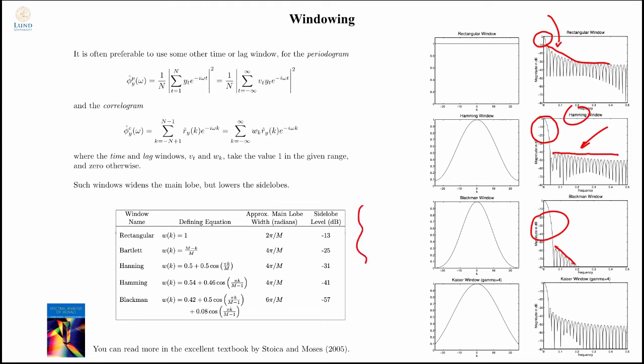Here is a couple of examples. You can read about this in more detail in the spectral analysis book by Stoica and Moses. It's available on my web page. It's an excellent book on the topic.